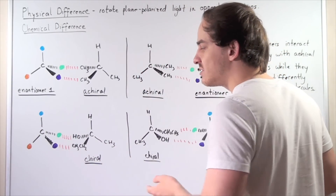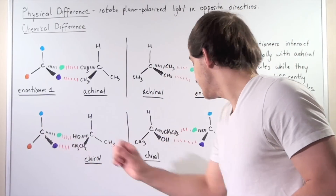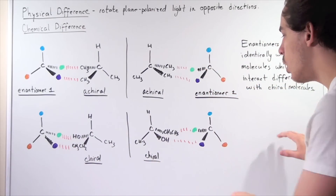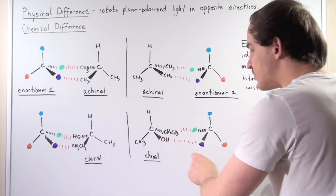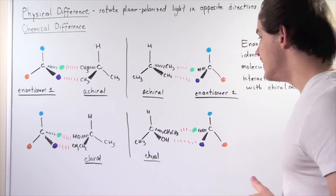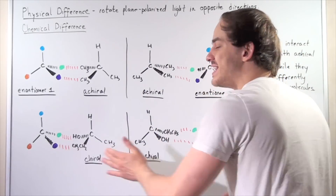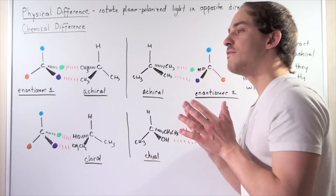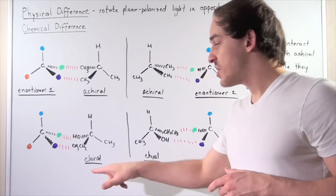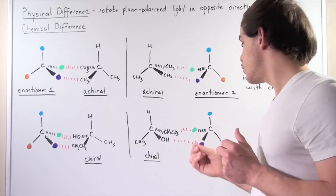We have the purple group interacting with the ethyl and the green group interacting with our hydroxide. Now let's take the mirror image — enantiomer number 2 — and interact it with the same chiral molecule. We simply flip this. Now our purple interacts with our hydroxide and the green interacts with our ethyl group, whereas before we had the green and hydroxide interaction and the purple and ethyl interaction. So now there's a difference in the way these two enantiomers interact with our chiral molecules. And in fact, that's always true — whenever we take our pair of enantiomers and interact them with chiral molecules, there will be a chemical distinction, a chemical difference between the interactions.